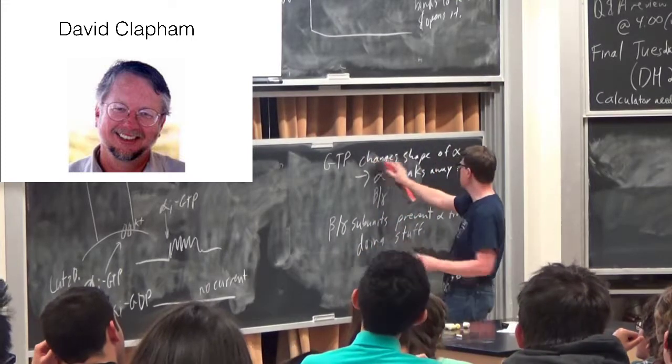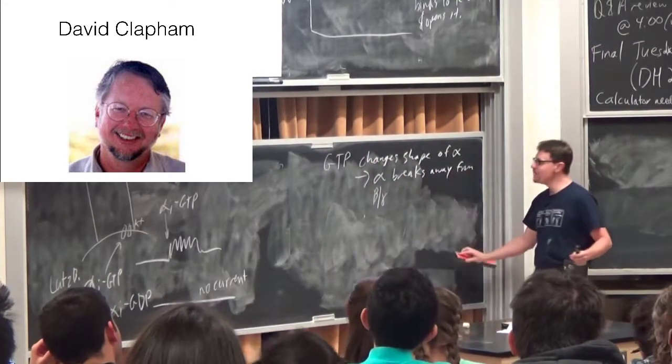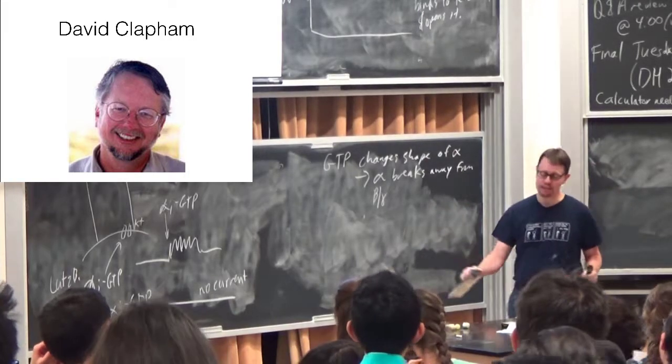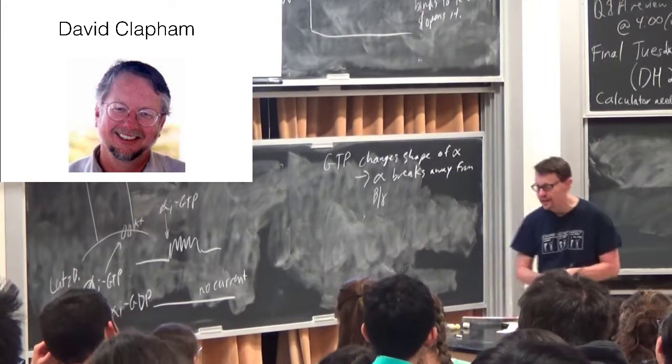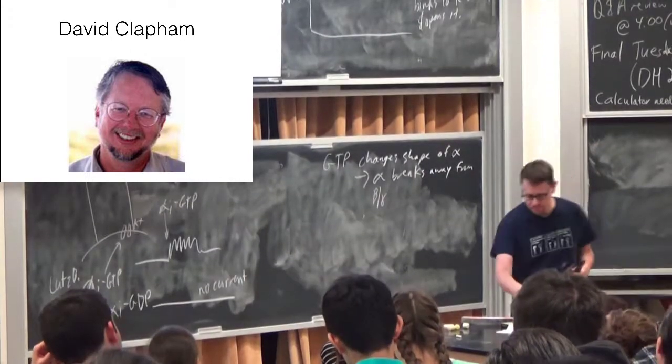Um, and so, you know, this is right. The alpha changes shape and the alpha breaks away from the beta gamma. Fine with that. But the beta gamma, the idea that the beta gamma subunit is a regulator of the alpha is something that he thought was just incorrect.